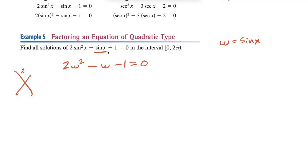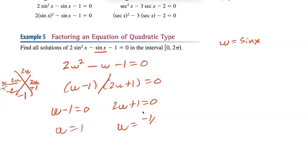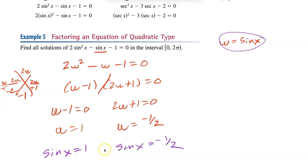The equation 2sin²x − sin x − 1 = 0 becomes 2w² − w − 1 = 0, which is much easier to factor. Factoring gives (w − 1)(2w + 1) = 0, so w = 1 and w = −1/2. Now plug sine back in for w: sine x = 1 and sine x = −1/2. You still have to solve both.